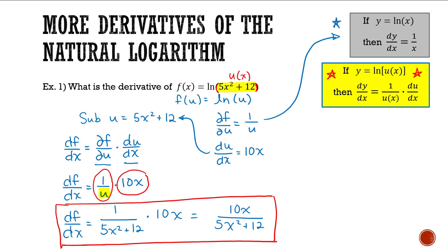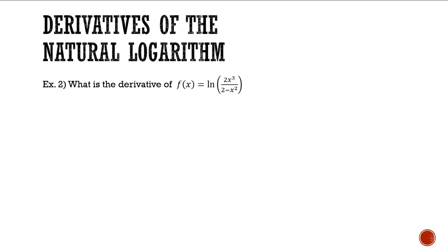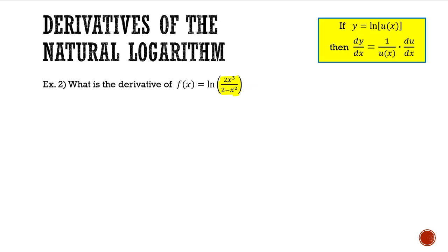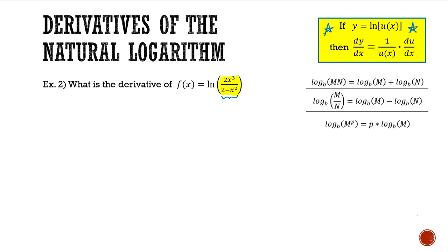Let's do one more example. Example 2: what is the derivative of f(x) = ln(2x³ / (2 − x²))? We have quite a complex function inside the ln, so we could jump right into the chain rule and it would work, but when computing du/dx it's going to be a little tricky. I suggest to students: before diving into any rule, see if you can simplify your expression first.